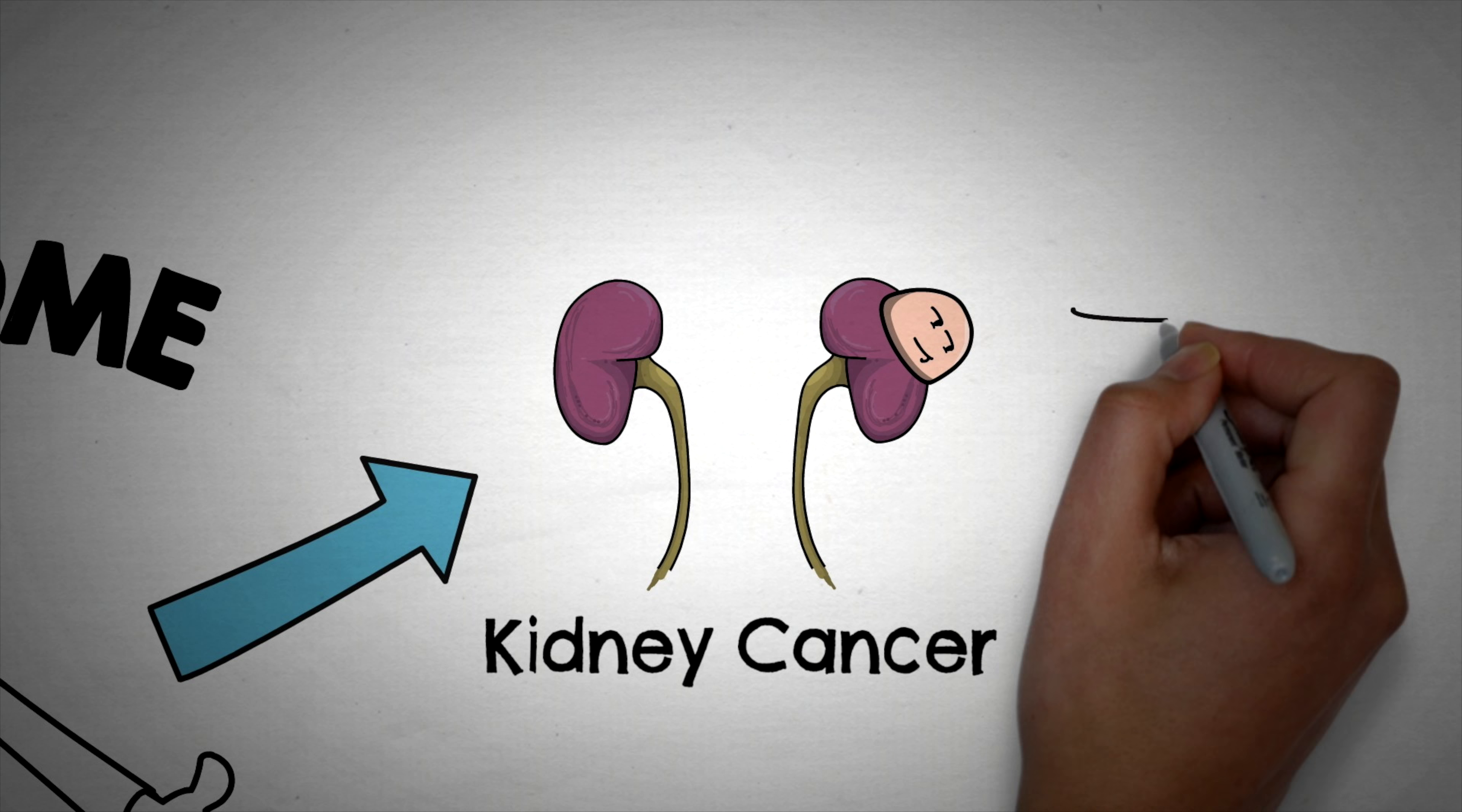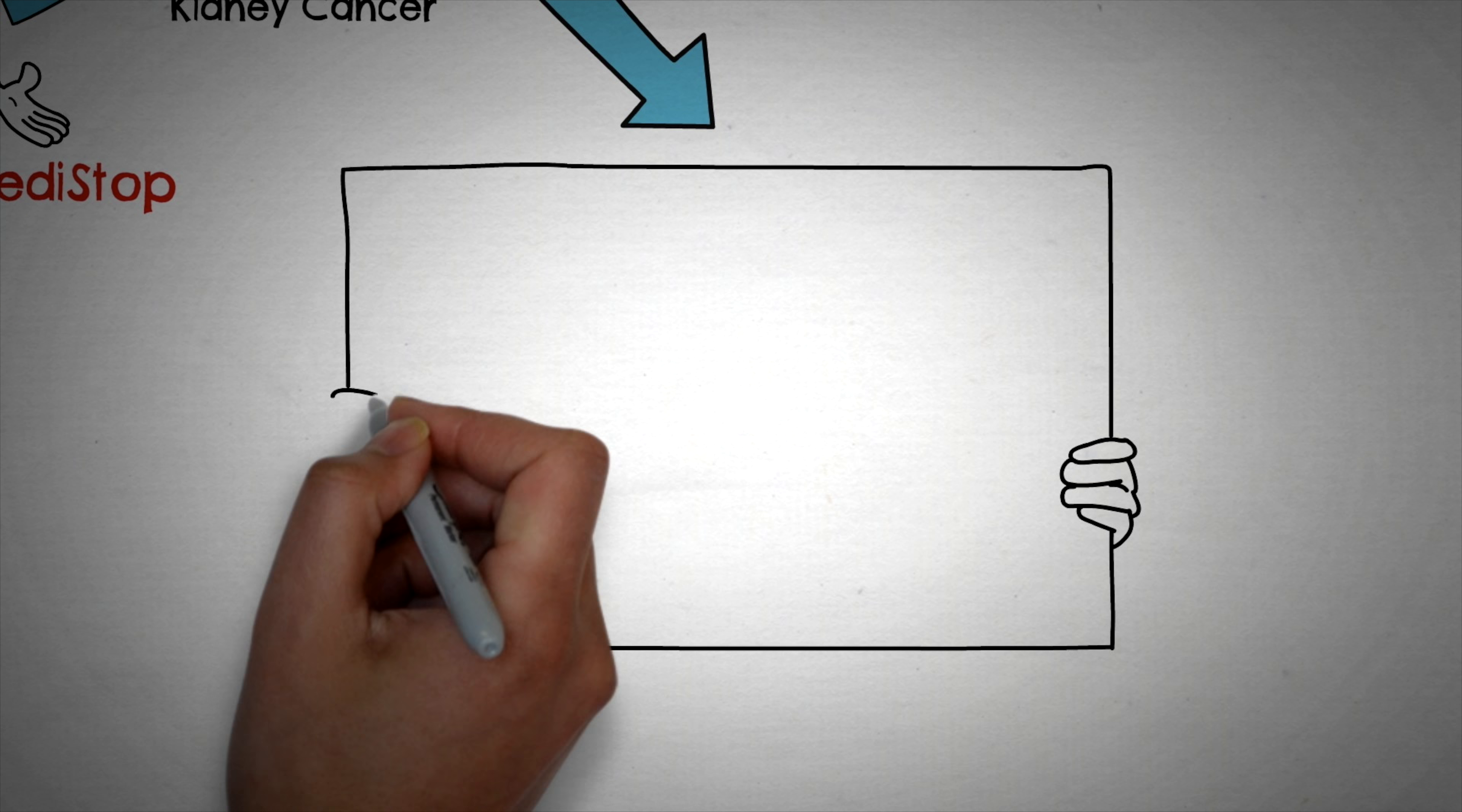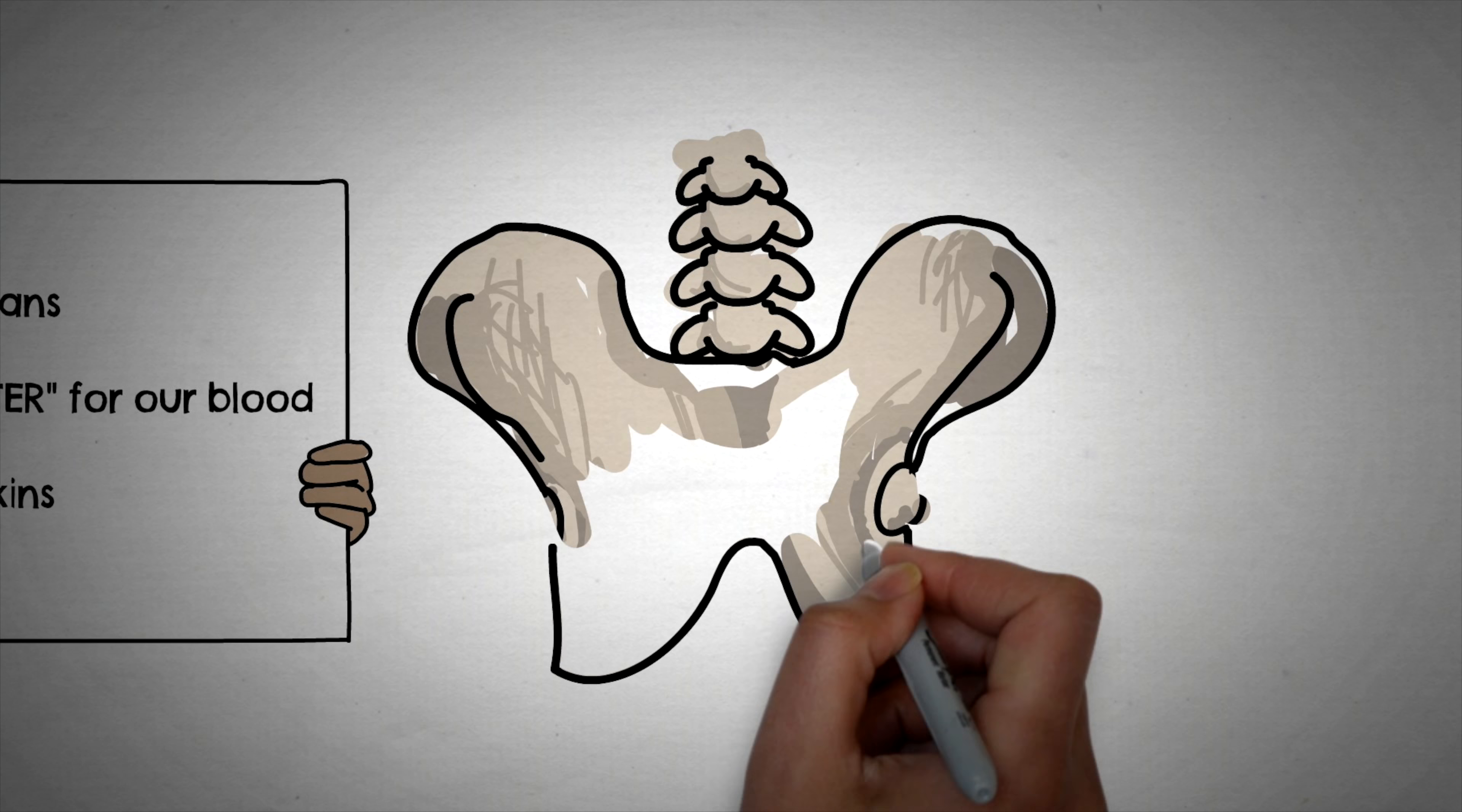Kidney cancer, also known as renal cell carcinoma, is a type of cancer that starts in the cells of the kidneys. The kidneys are two bean-shaped organs that are located on either side of the spine and are responsible for filtering waste from the blood and producing urine.